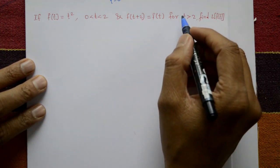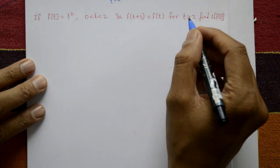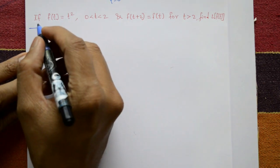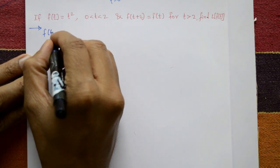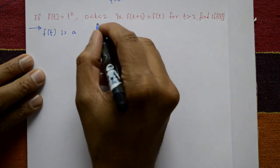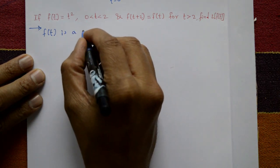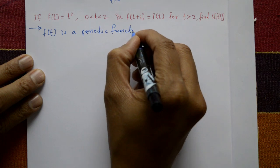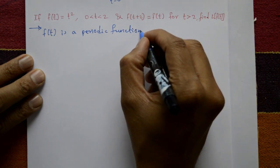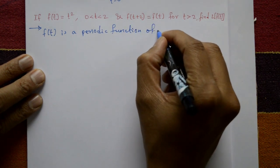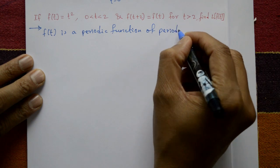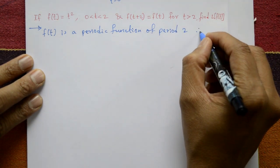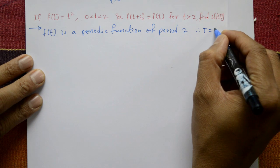This problem is a Laplace transform of a periodic function. f of t is a periodic function. This is a periodic function of period T. The period is 2, that means capital T is equal to 2.